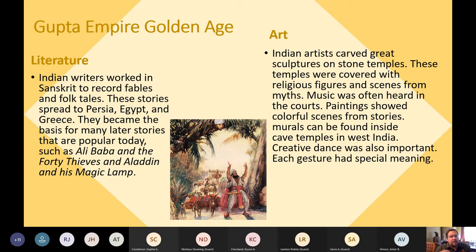In literature, Indian writers worked in Sanskrit to record fables and folktales. These stories spread to Persia, Egypt, and even Greece, and became the basis of later popular stories such as Ali Baba and the Forty Thieves and Aladdin and His Magic Lamp — so Aladdin is originally a tale from India. In art, Indian artists carved great sculptures and stone temples covered with religious figures and scenes from myths. Music was often heard in courts, paintings showed colorful scenes from stories, murals can be found in cave temples in West India, and creative dance with gestures of special meaning was also important.